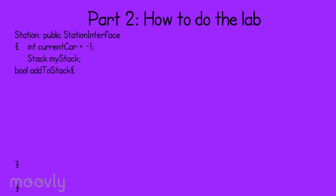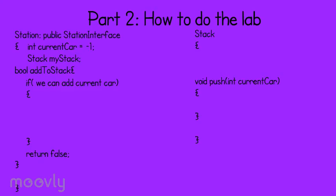Now let's go over one example function to show how the parts of the lab work together. Let's assume our station has an integer named current car and a stack named my stack, and the stack class has a function called push which takes in an integer. We will go over the add to stack function. Add to stack is a boolean function, so we'll return true if we can add the current number or false if we cannot add the current car. The first thing we will want to check is to make sure that our current car does not equal negative one and that we have less than five things in our stack. If both of those are the case, we can continue on with our function; else we'll want to return false. After that, we can call my stack dot push and pass in the current car.